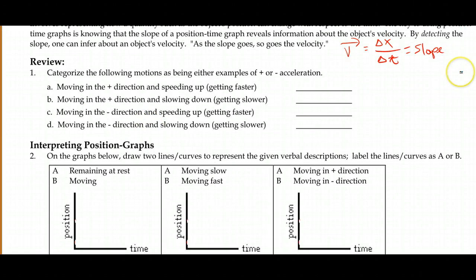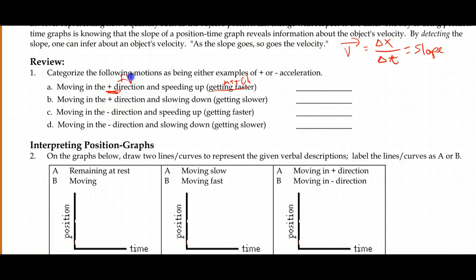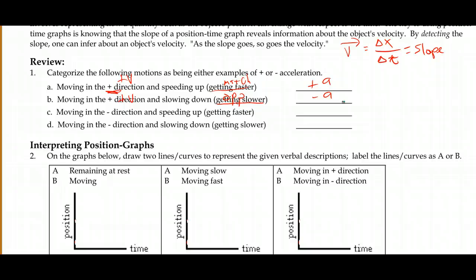A quick review of acceleration and how we determine its direction. To get faster, the direction of the acceleration and the velocity must match. If it's moving in the positive direction — positive velocity — we need positive acceleration. If it gets slower, we need them to be opposites: positive velocity requires negative acceleration. Most people think of positive acceleration as getting faster and negative acceleration as slowing down, but that's not always true.